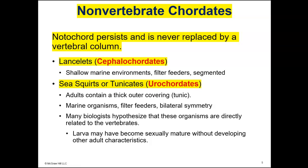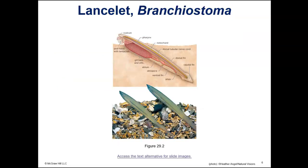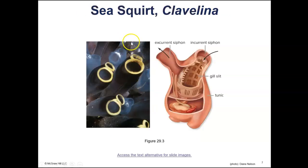The first two chordates are not vertebrates — they're called lancelets and sea squirts. The lancelets, or cephalochordates, live in shallow marine environments. They are filter feeders and they are segmented. Then you have the sea squirts, or tunicates, in the group called urochordates. They are also marine and also filter feeders. You can see a picture here of the lancelets.